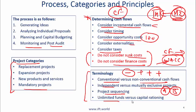Unlimited funds versus capital rationing. Very occasionally a company might have a lot of funds and will do all projects that have a positive NPV. But the more realistic scenario is where there is a capital budget — companies know they have a certain amount of budget and need to decide the best projects to do within that budget.